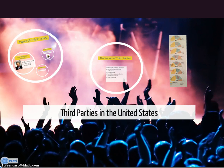Welcome to our discussion on the types of third parties. Third parties have existed in the United States since the early 19th century. Over the nation's history, third parties typically have fallen into one of three general categories: issue advocacy parties, ideologically oriented parties, and splinter parties.